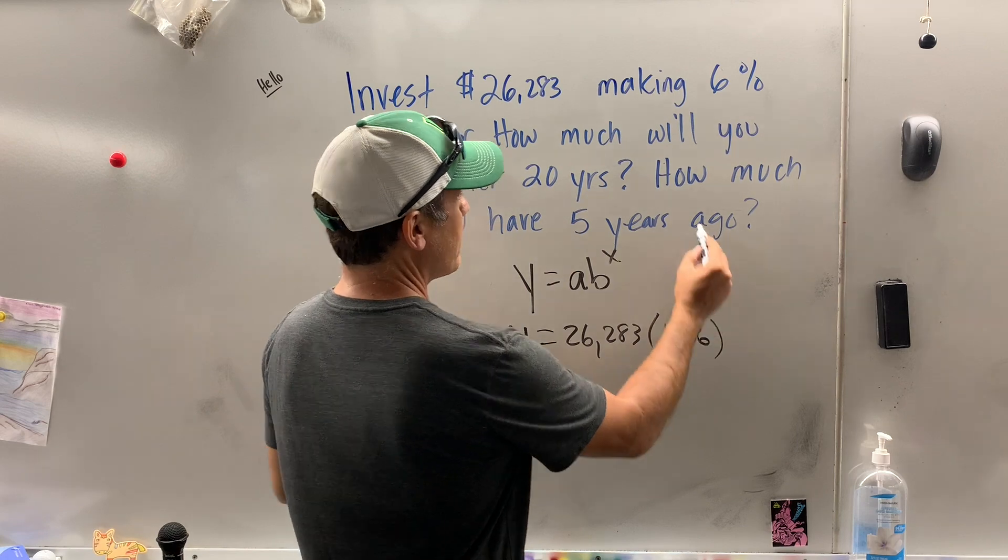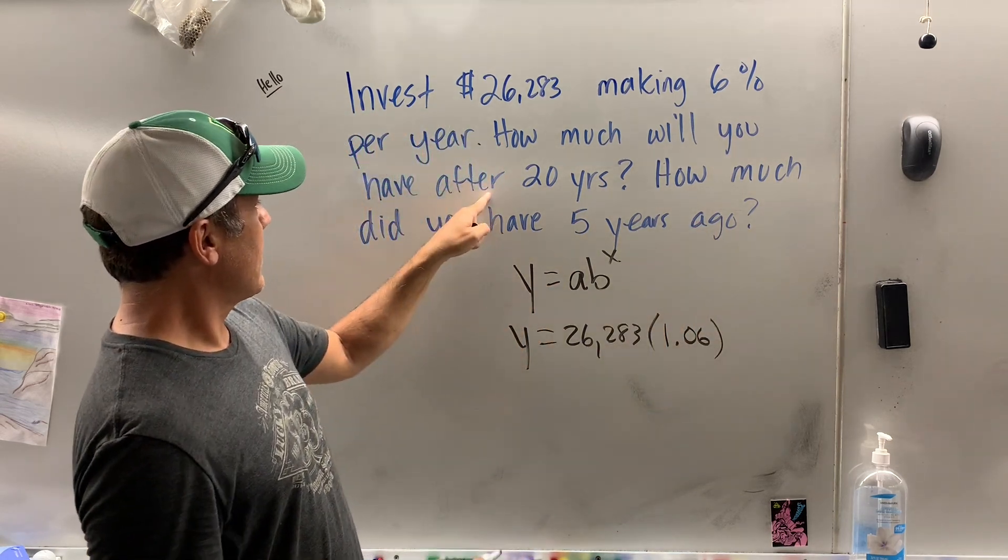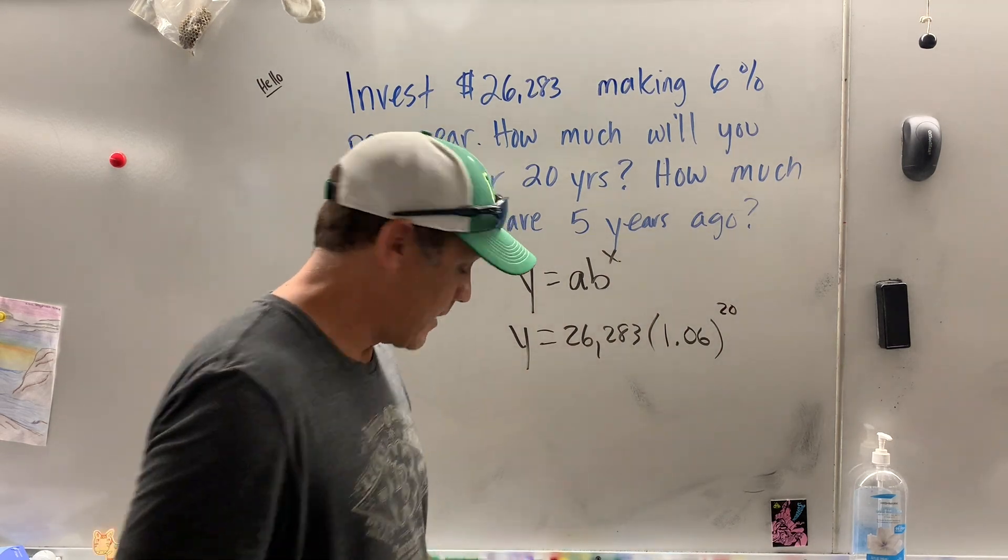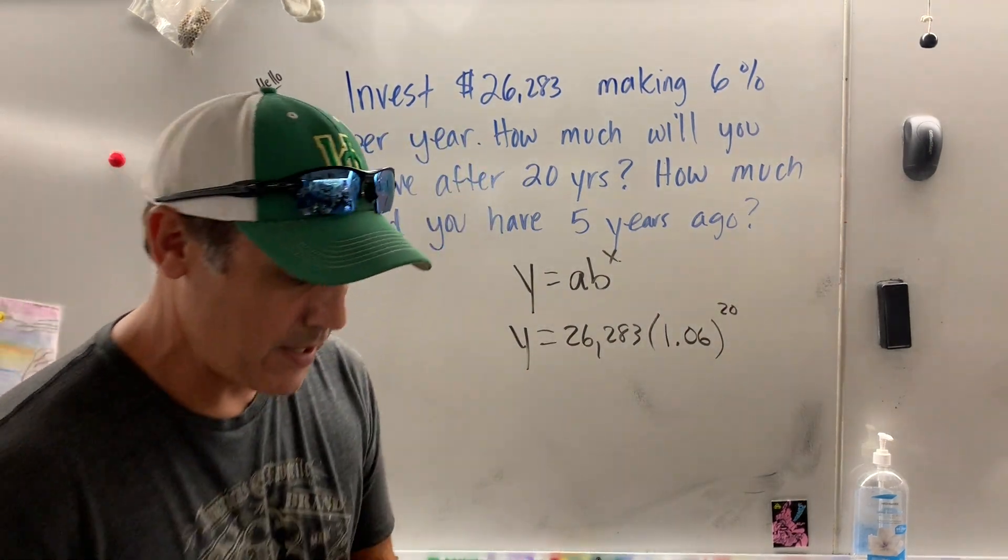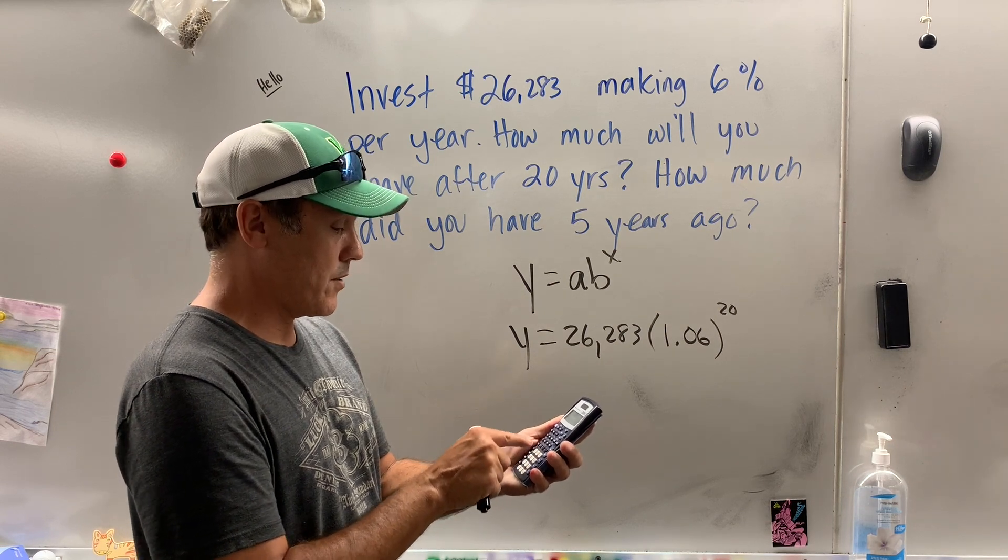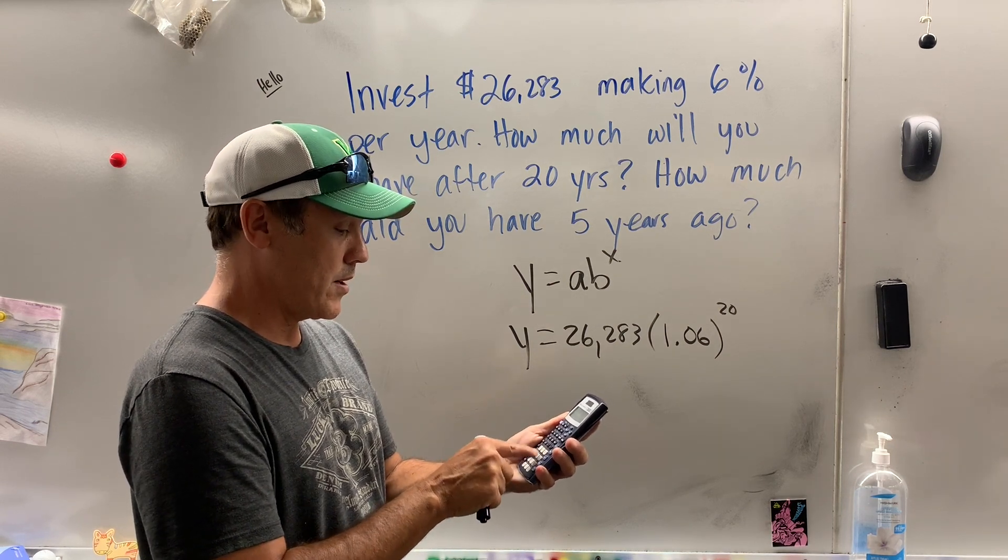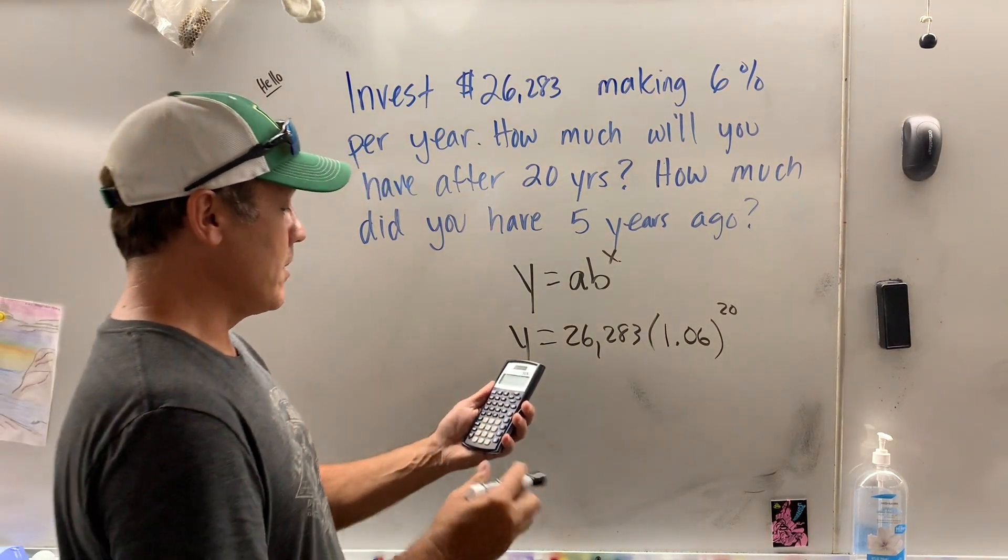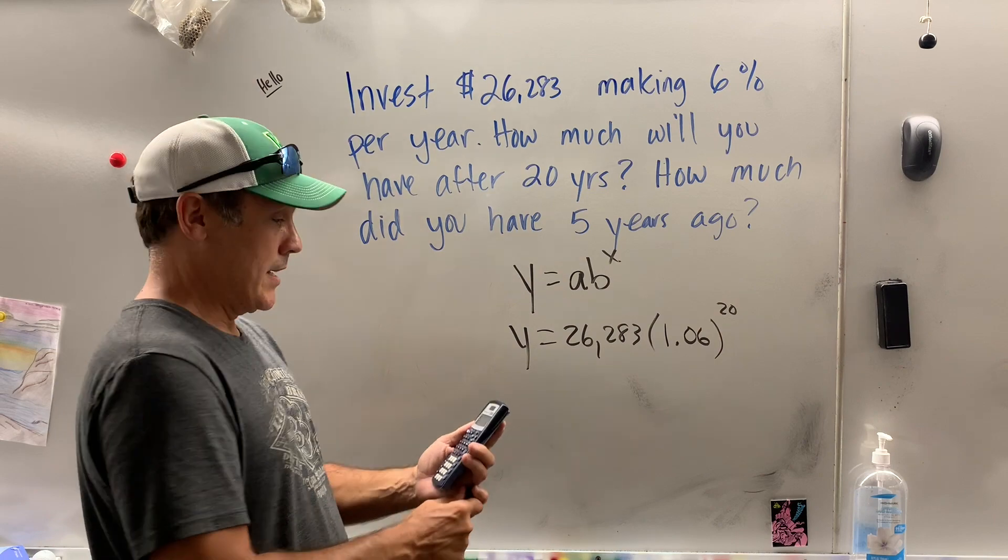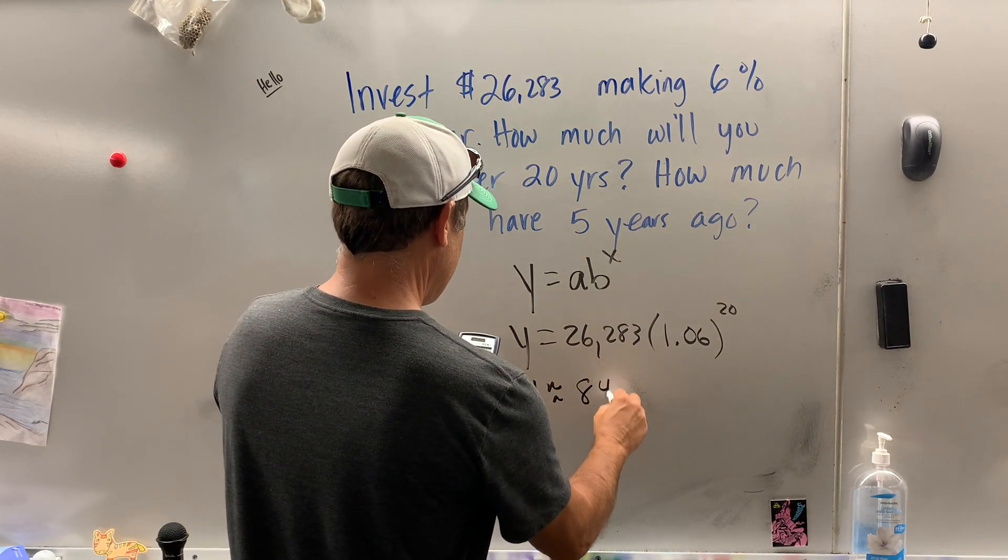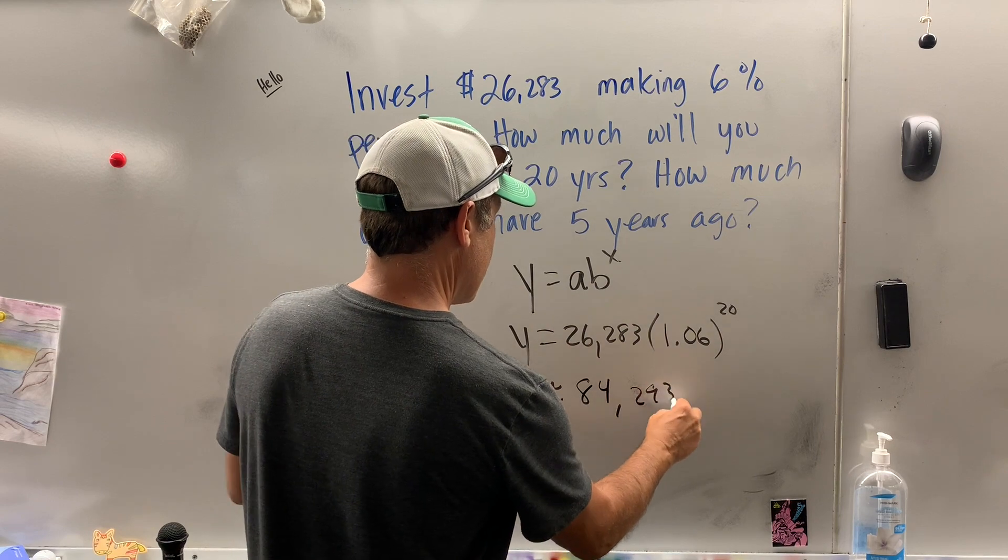Now I'm going to raise it to after 20 years. So now I bust out my calculator. If I put it in the calculator, you just put in what you see: 26,283, parentheses, 1.06, close the parentheses, raise to the 20th, equals, you will have about $84,293.